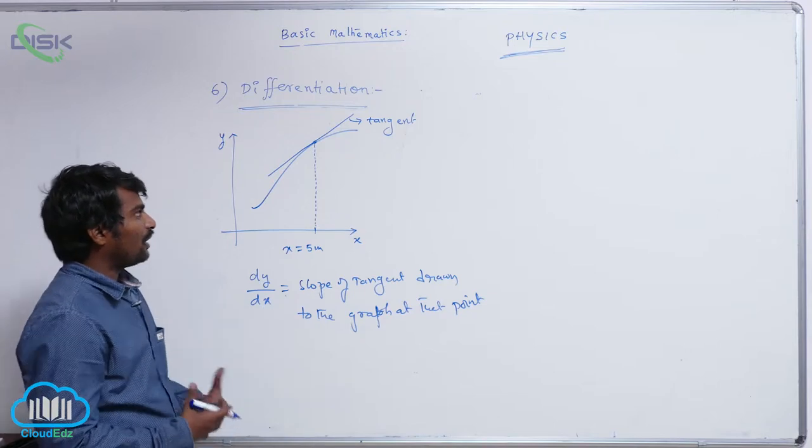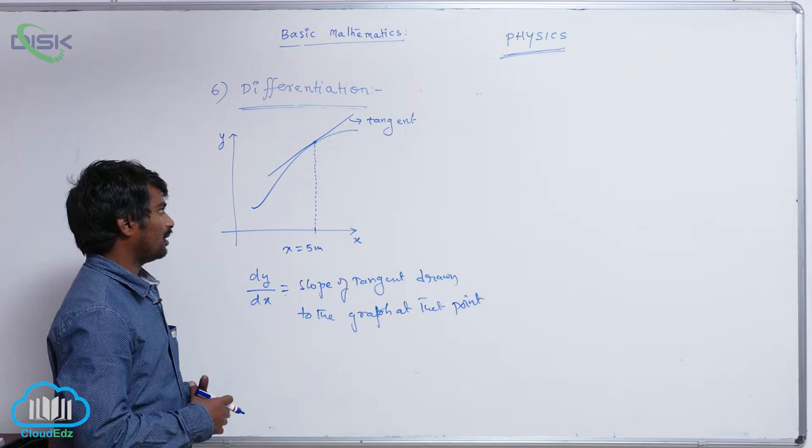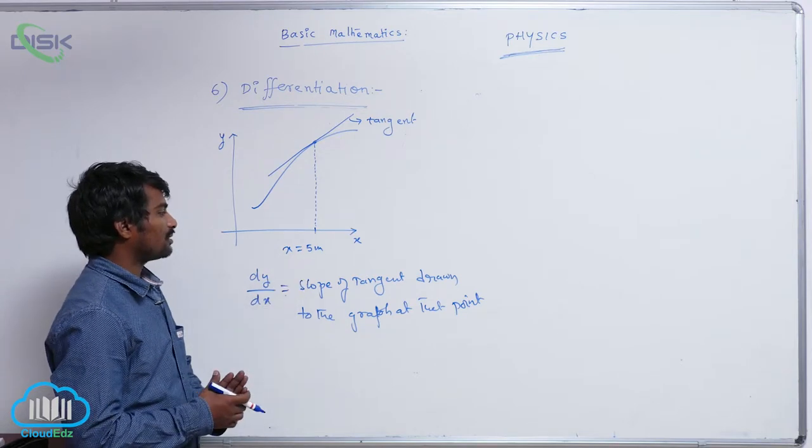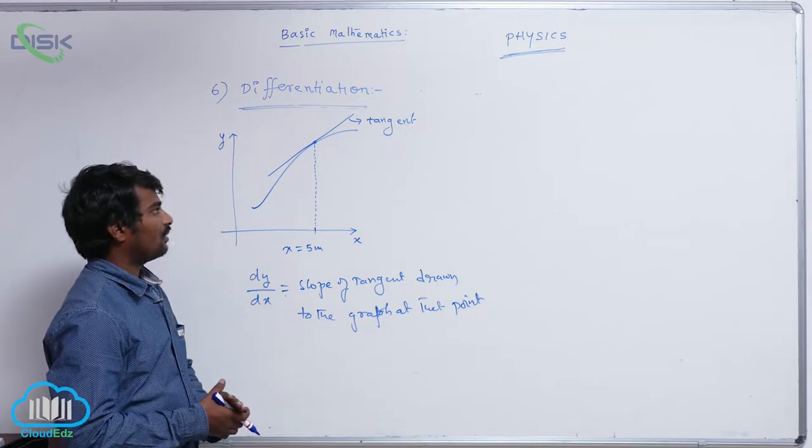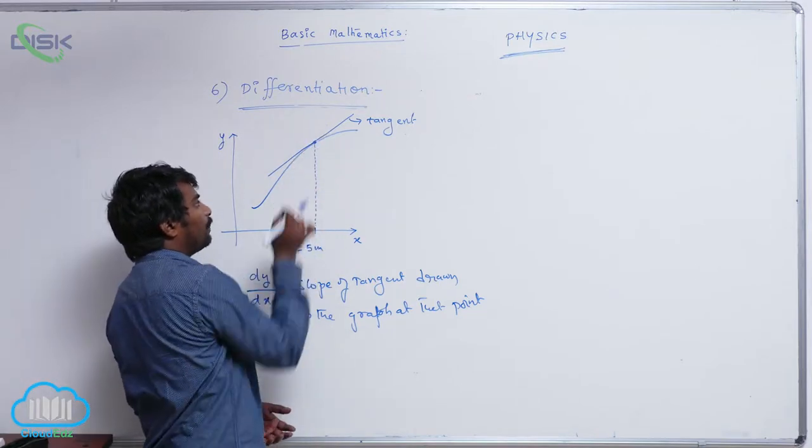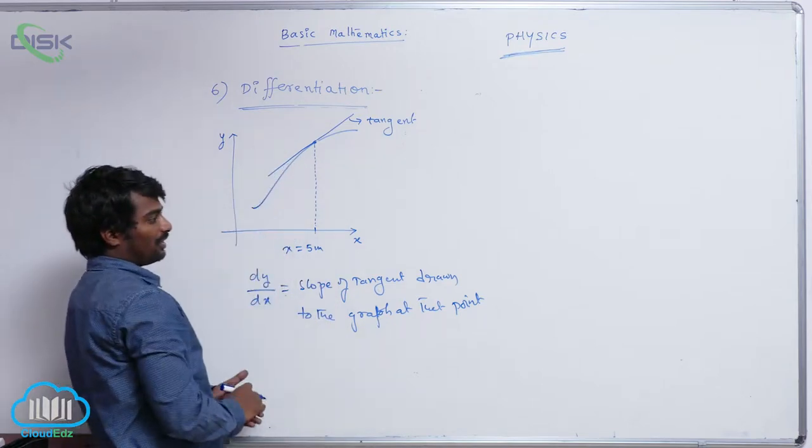dy by dx. At x is equal to 5, I want to calculate. It has to give that at which point I have to calculate. At x equal to 5 meters, he asked me to calculate the instantaneous change of y with respect to x. That's why at that point I have drawn a tangent and I am calculating the slope of the tangent.